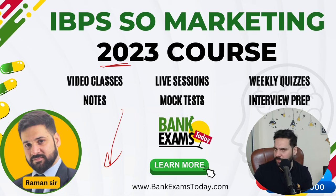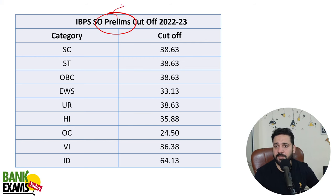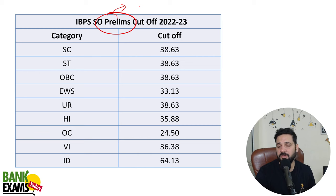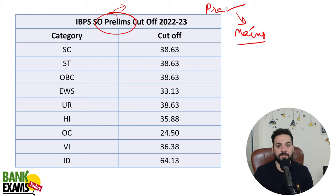There you can join for the mains as well as for the pre-exam. This is the cut-off — pre-ka cut-off. Pre-cut-off is not important for the final selection. Final selection mein iska koi relevance nahi hai. If you clear the pre-exam, then you are eligible for the mains exam — that's the whole concept of the pre-exam. The cut-off for the unreserved category was out of 125, 38.63.